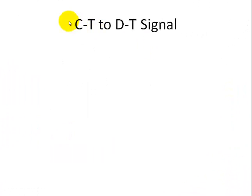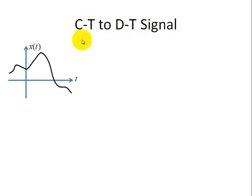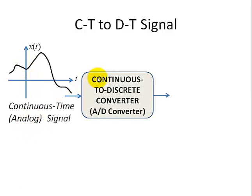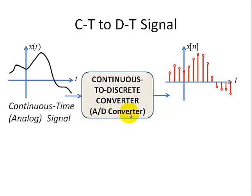Here's a block diagram for converting a continuous time signal to a discrete time signal. We're given a continuous time signal, often also referred to as an analog signal, and here's our continuous to discrete time converter — one form of an analog to digital converter. And out pops a sequence of numbers known as a discrete time signal.